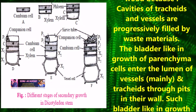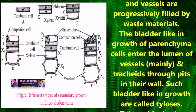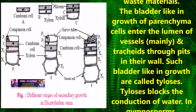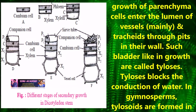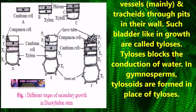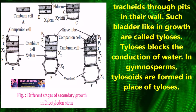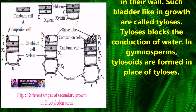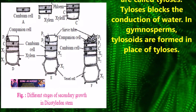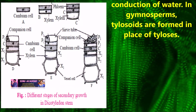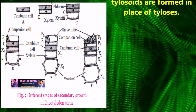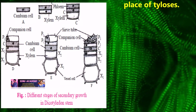Bladder-like ingrowths of parenchyma cells enter the lumen of vessels and tracheids through pits in their wall. Such bladder-like ingrowths are called tylosis, and tylosis blocks the conduction of water. In gymnosperms, tylosoids are formed in the place of tylosis.